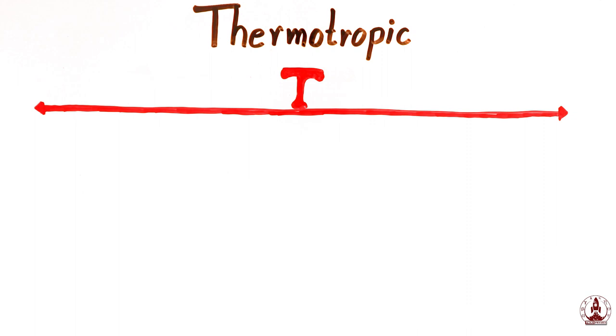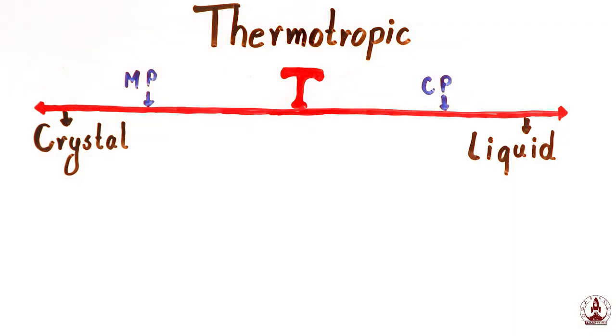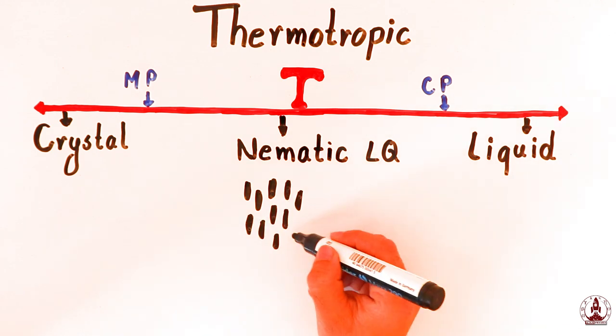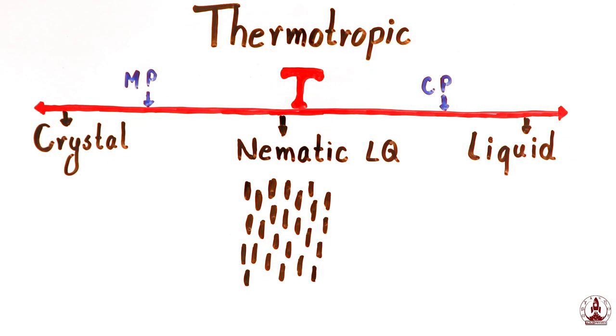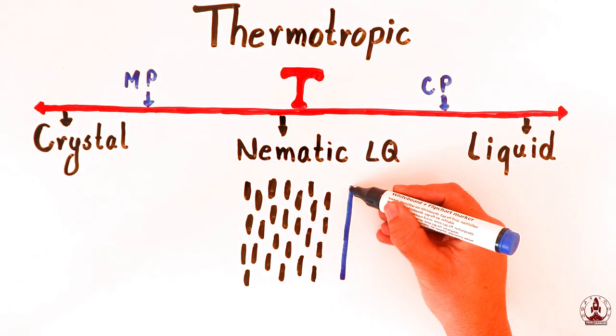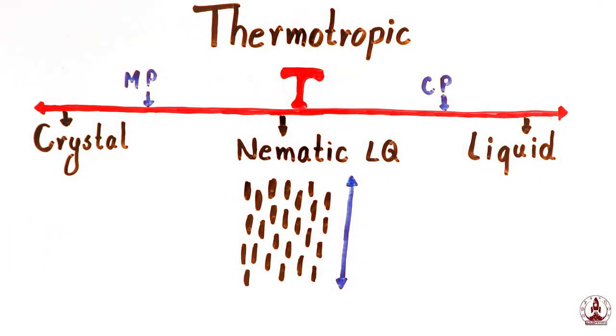Remember our first discussion about liquid crystal? It falls in between crystal and liquids or isotropic materials. There will be our two points stated as melting point and clearing points. Here lies our very popular nematic liquid crystal. The constituents of nematic liquid crystals will orient in some direction but will lack the translational order property. So, if you remember from our previous discussions about orientational and translational order, it will just have orientational order.